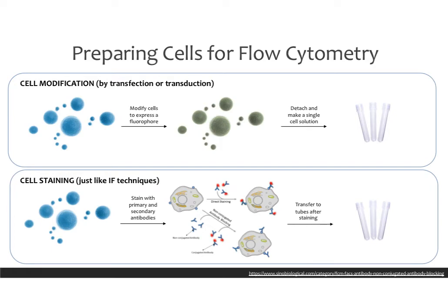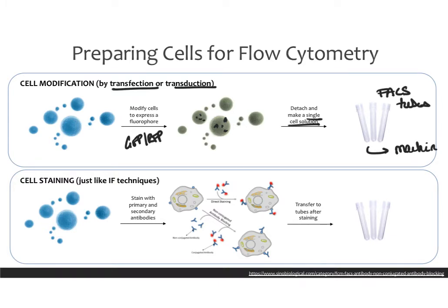So let's start with cell preparation. There are two ways you might prepare your cells for flow cytometry. One is that your cells might already be modified — you might have transfected or transduced them to express some sort of fluorophore, maybe a GFP or RFP construct. So some of your cells might be green and some might not be. You're going to detach them from the plates and make a single cell solution that you put into flow tubes, take these to the core, and run them through the machine. This will allow you to measure what percent of your cells are expressing whatever fluorophore you're interested in.